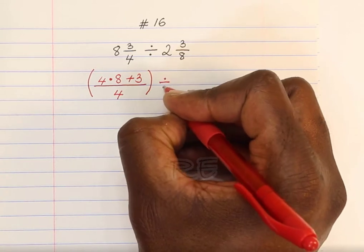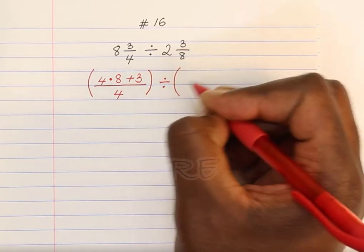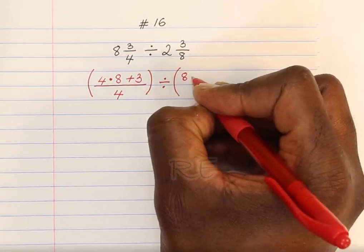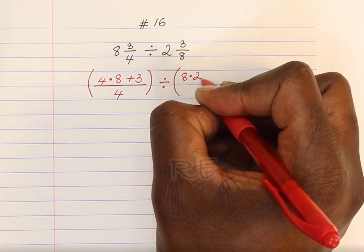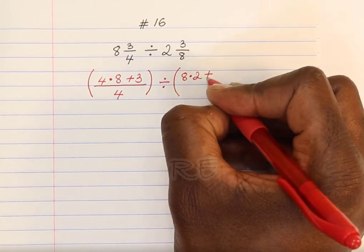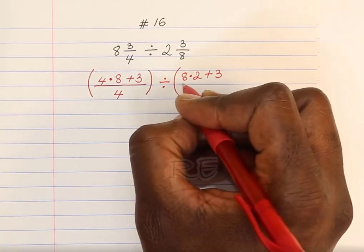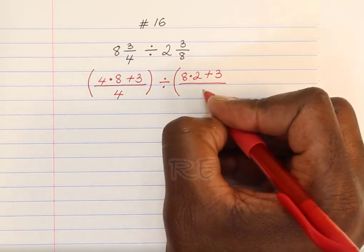For the first mixed number, divided by, we're going to multiply 8 by 2, add it to 3, divided by 8.